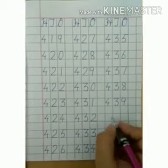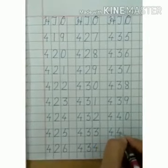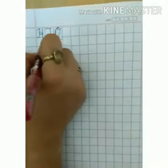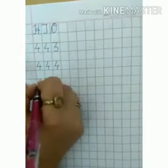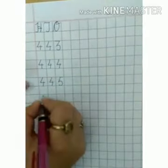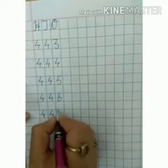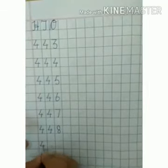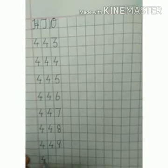After 439, we will write next number 440. 441, 442. Next number is 443. 444, 445. 446, 447, 448. 449. After 449, we will write next number that is 450.